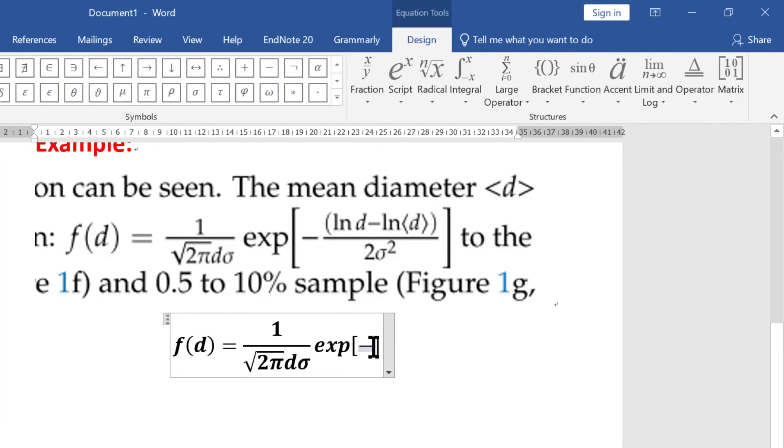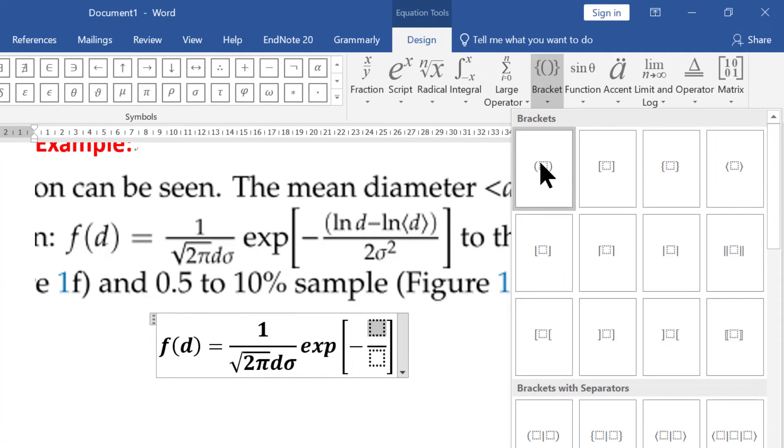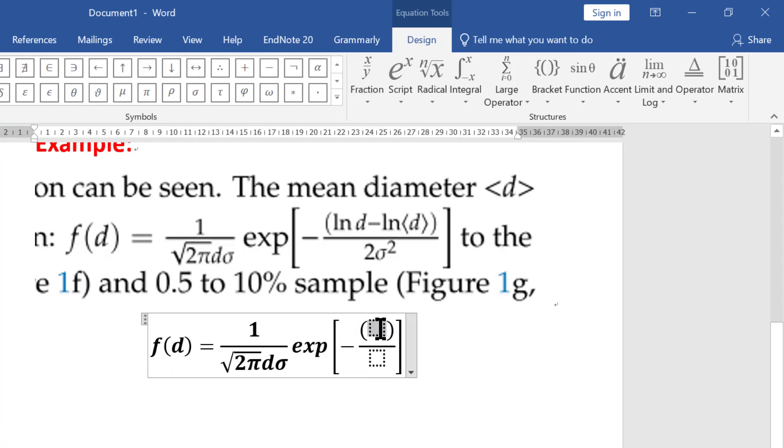Again go back to the fraction, choose this one. Now over here you need a bracket. Bracket which you can use either keyboard or you can select it from the design menu. Type ln d minus ln.